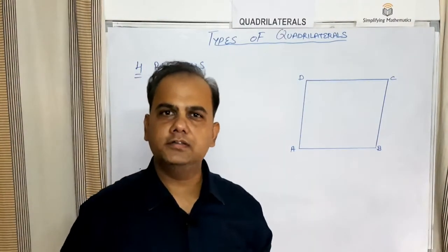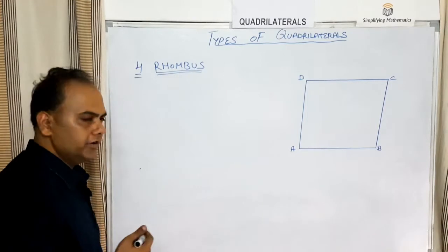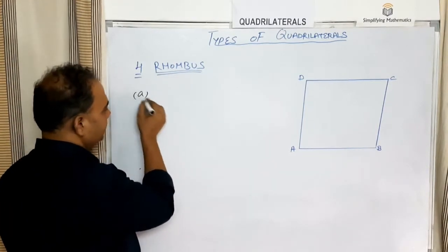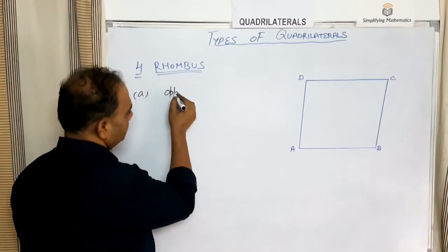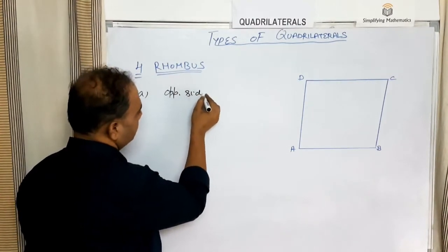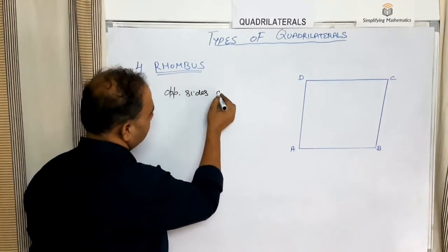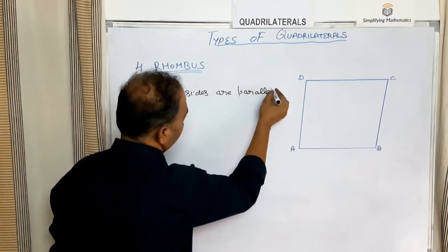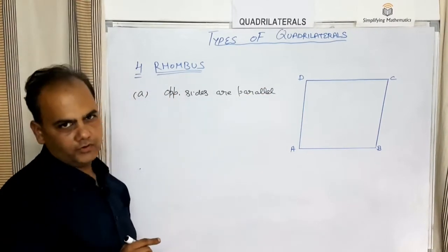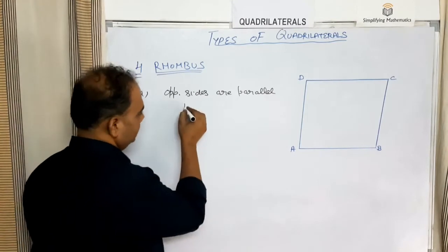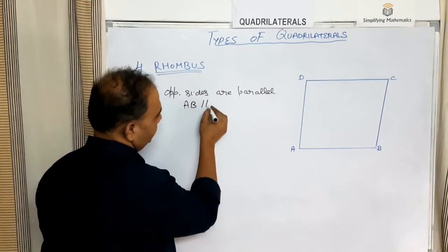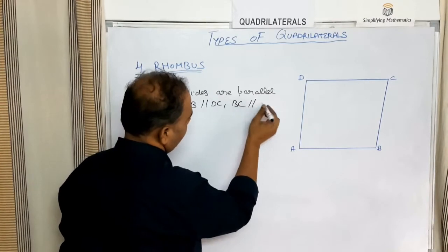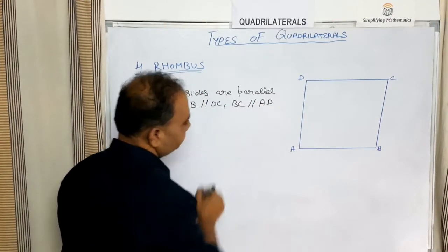The next type of quadrilateral is a rhombus. Consider a quadrilateral ABCD as a rhombus. The first property is that the opposite sides of a rhombus are parallel — AB is parallel to DC, and BC is parallel to AD.